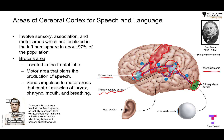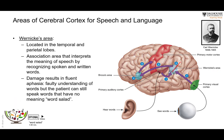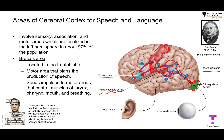If Wernicke's area is destroyed, the patient can still speak and still hear, but cannot understand. If you ask a question, the patient will answer with irrelevant things — what we call word salad — because there is no understanding. On the other hand, if Broca's area is affected, the patient can understand what is read or said to them, but cannot produce speech.